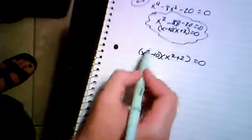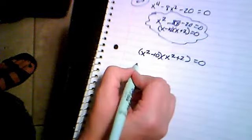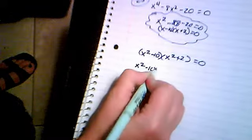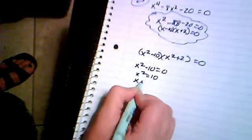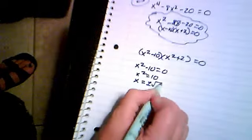Now this thing is factored, but I need to work on it a little bit more. If x squared minus 10 is equal to 0, then x squared is equal to 10. So that means that x is equal to plus or minus the square root of 10.